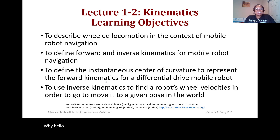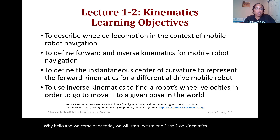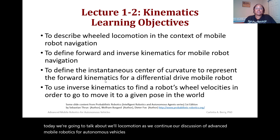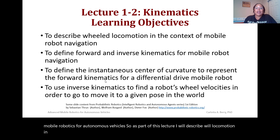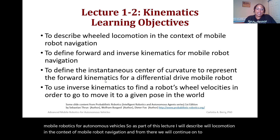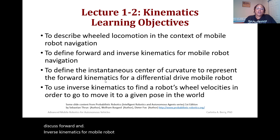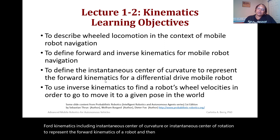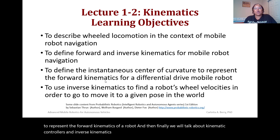Welcome back. Today we will start lecture 1-2 on kinematics. In particular, we're going to talk about wheeled locomotion as we continue our discussion of advanced mobile robotics for autonomous vehicles. I will describe wheeled locomotion in the context of mobile robot navigation, then discuss forward and inverse kinematics, including instantaneous center of curvature or instantaneous center of rotation, and finally kinematic controllers and inverse kinematics.